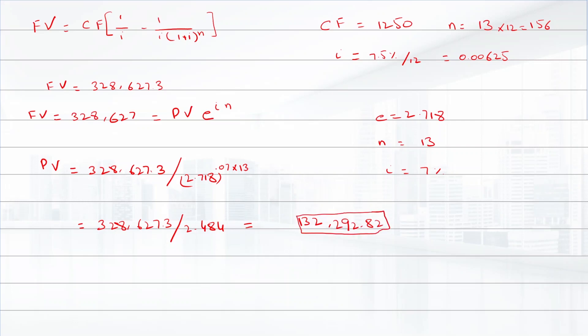So $132,292.82 will be the present value of the lump sum that you would need to invest today in Investment B.